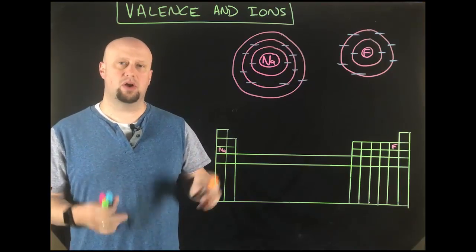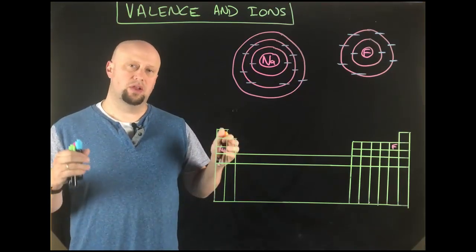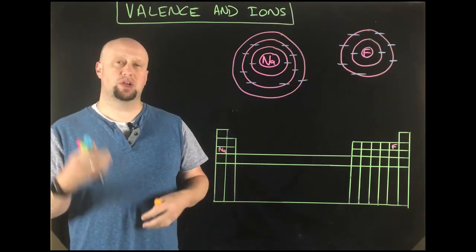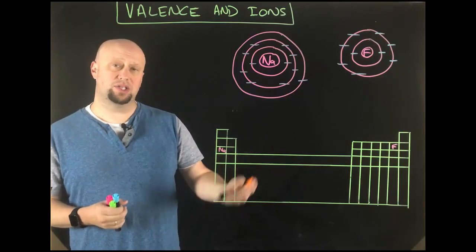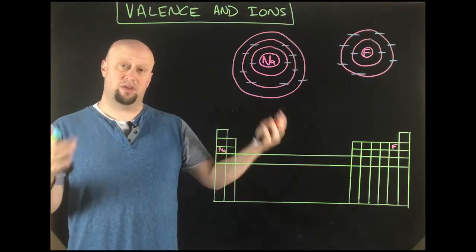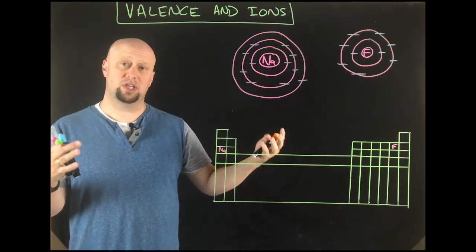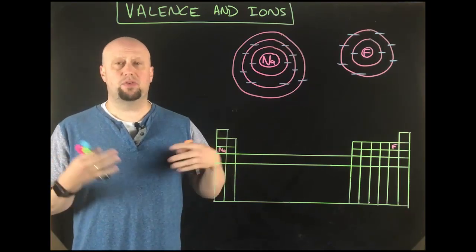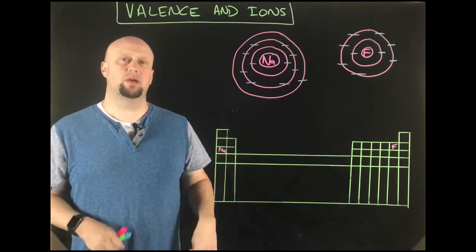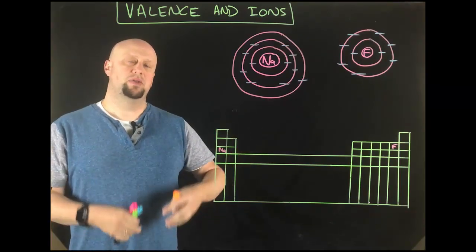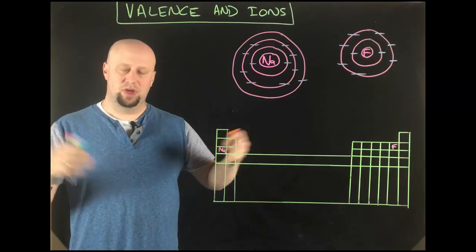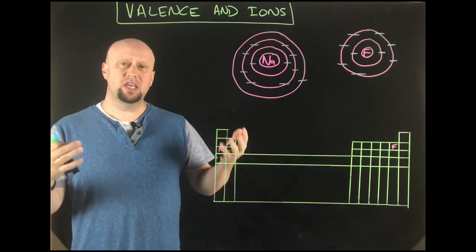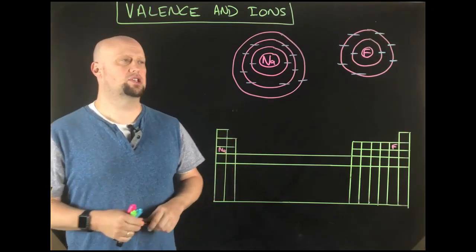Valence electrons are largely the electrons that perform reactions — the ones that are going to form ions, the ones that are going to lead to ionic bonds, the electrons that are shared in covalent bonds, the electrons that make up the majority of the sea of electrons in metallic bonds. Everything comes down to our valence electrons.